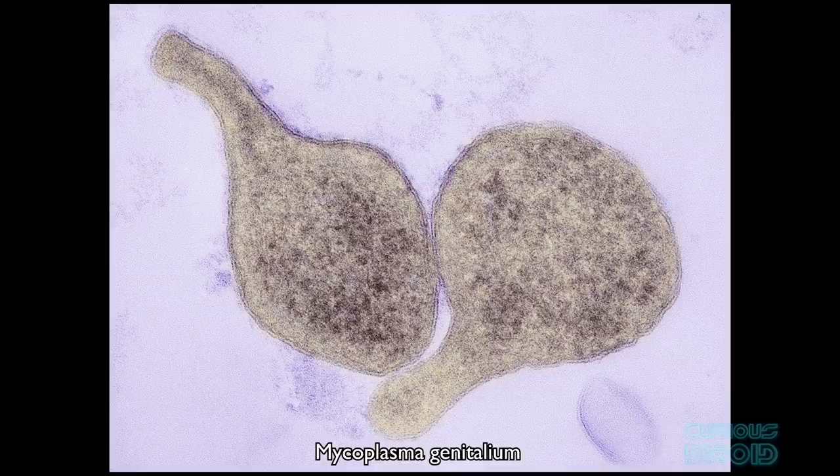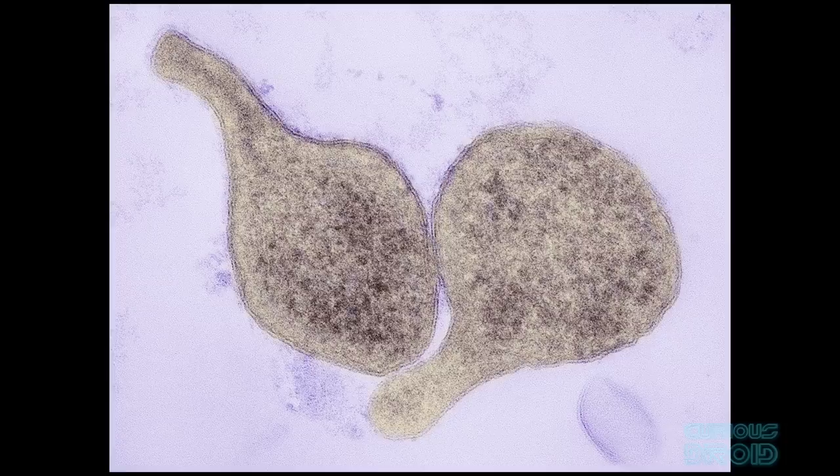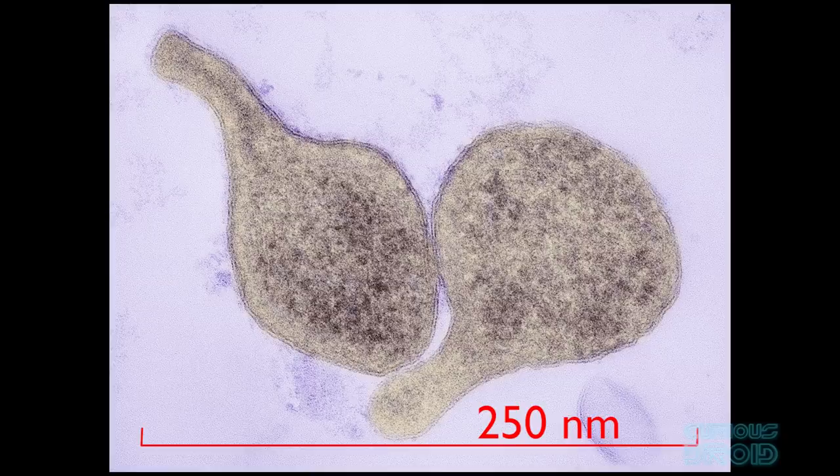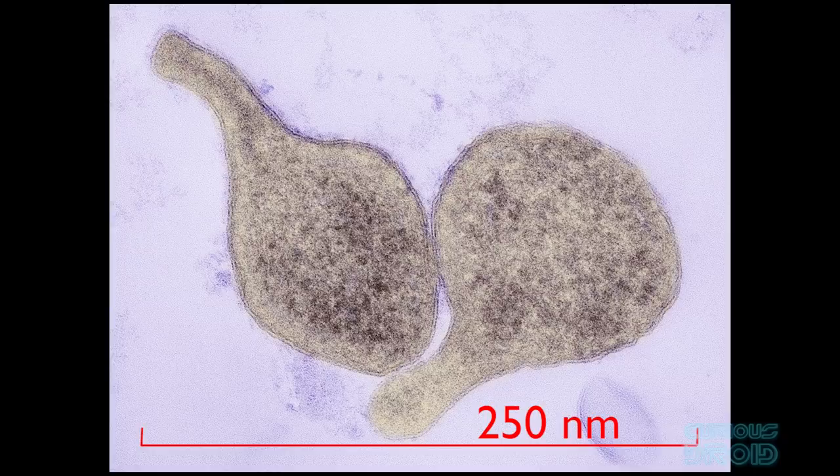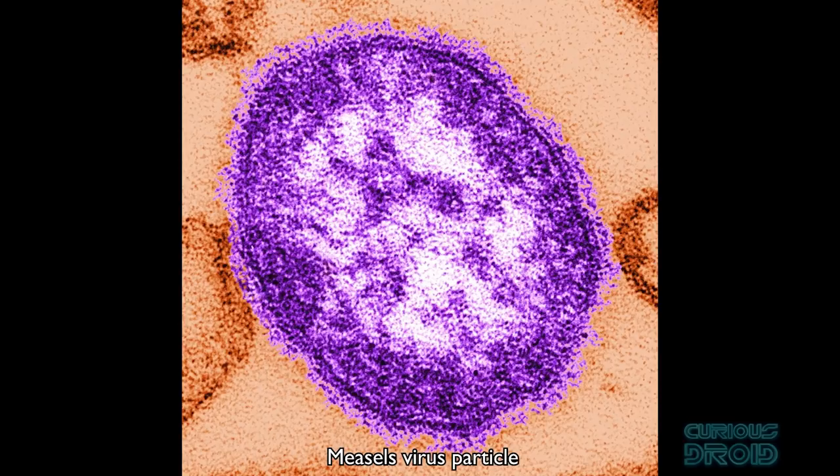But life gets smaller, mycoplasma genitalium is a parasitic bacterium that lives in the bladder and waste disposal organs of primates and is the smallest to be capable of independent growth and reproduction and is about 200 to 300 nanometers in length, over 10 times smaller than that of the coiled DNA.